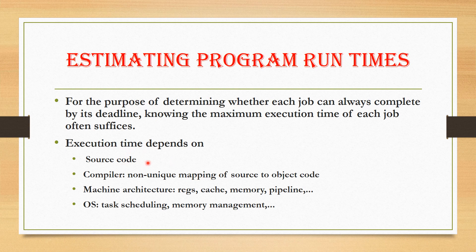This execution time depends on four things: source code, compiler, machine architecture, and operating system. Source code is our program. The compiler converts the source code into object code. Machine architecture refers to what type of memory, cache, and registers we are using, and which type of architecture we are using — all of these cause variation. The operating system involves task scheduling and memory management.